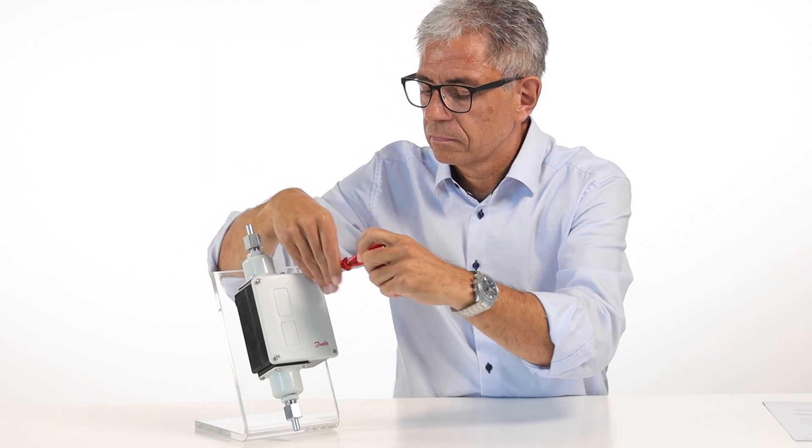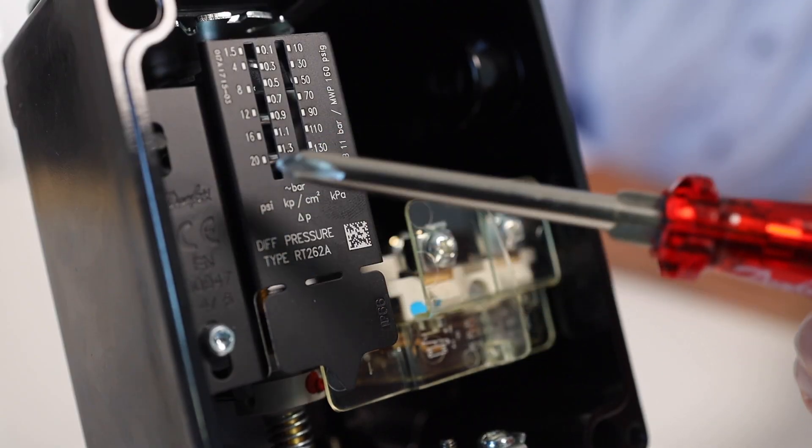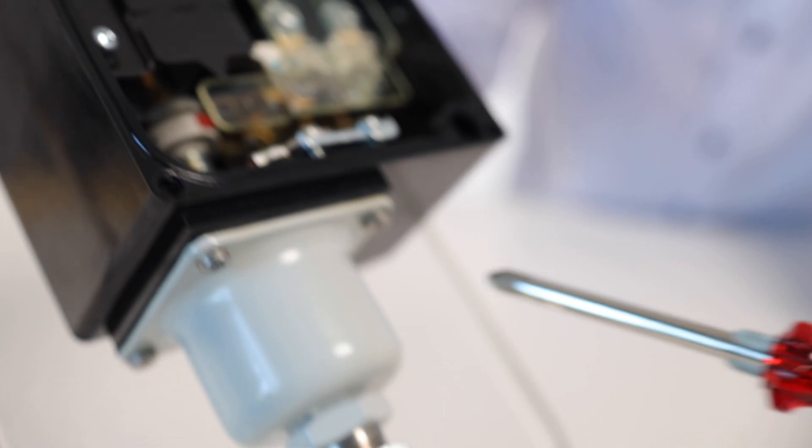First, remove the cover. Inside, you can see that it is an RT262A and at the bottom of the switch, you can see the unique code number.